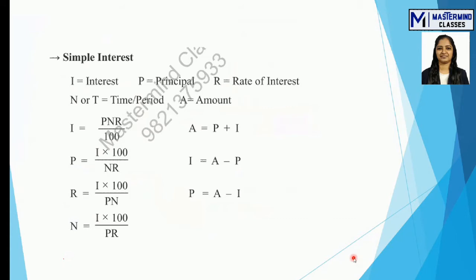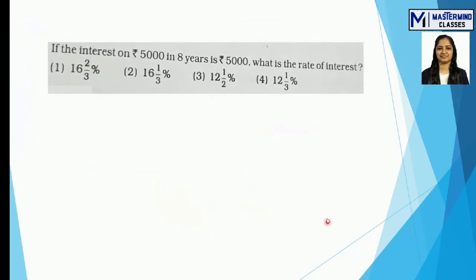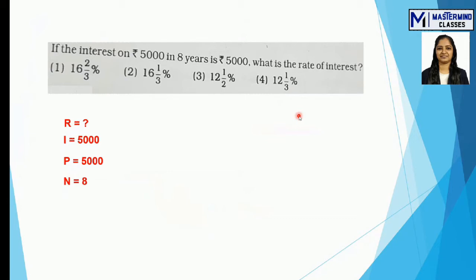Let's take the first example: if the interest on rupees 5000 over 8 years is rupees 5000, what is the rate of interest? Here we need to find R. So SI = 5000, P = 5000, N = 8 years. We'll use the formula R = (I × 100) / PN and substitute the values.